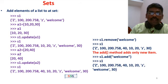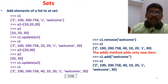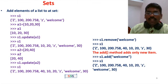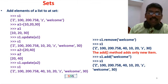To remove elements, use: S1.remove('Welcome'). This removes the specified element. The add() method adds only new items — duplicate items are not added. For example, S1.add('Welcome') will not add a duplicate. After printing S1, the removed or newly added elements are reflected.